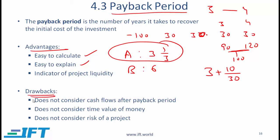What are the drawbacks? This method does not consider cash flows after the payback period. Therefore, it doesn't really tell us about the profitability of a project. We might have a situation where project A finishes at the end of year 4 — with a $100 investment, we get a total of 120 in 4 years. With project B, even though it takes longer to recoup the investment, it is possible that after the payback period we get 5 times more than the initial investment. The amount that we get after the investment has been recouped is ignored.